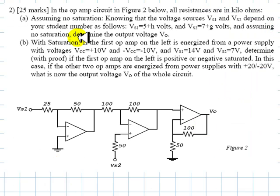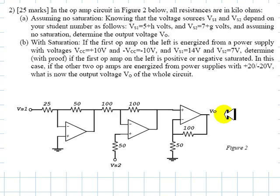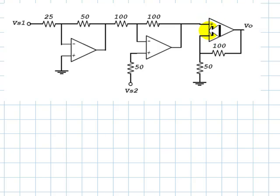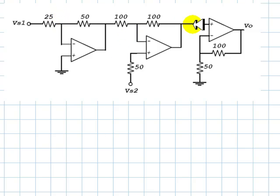Assuming there is no saturation, determine what is the output voltage of the whole combination. Let's solve that part. As we are assuming that there is no saturation, Vp equals Vn in all three amplifiers. So the non-inverting inputs are connected to zero.